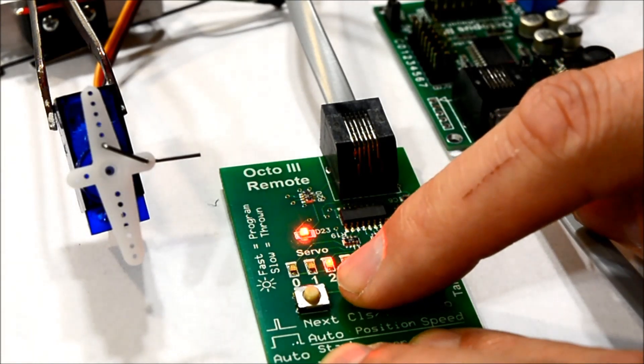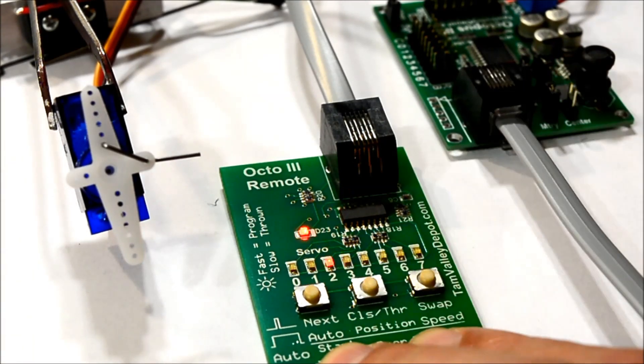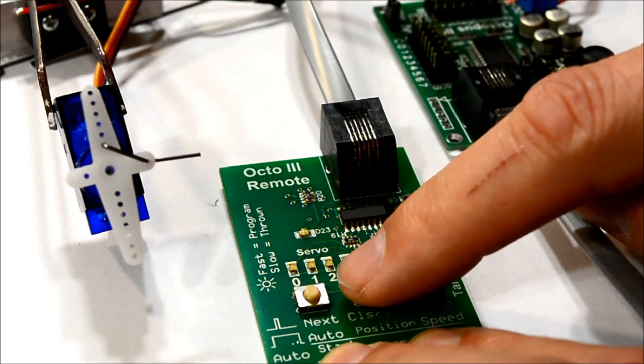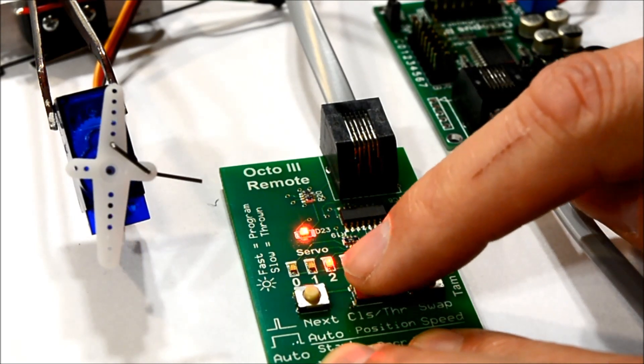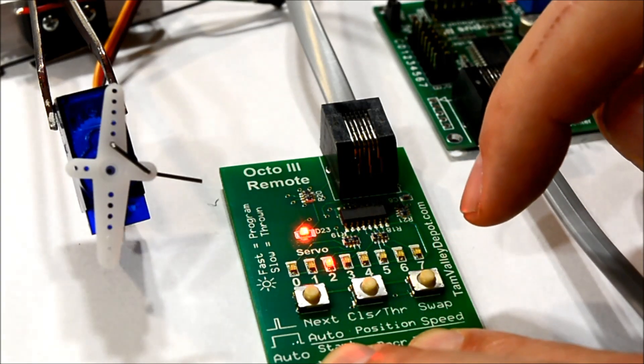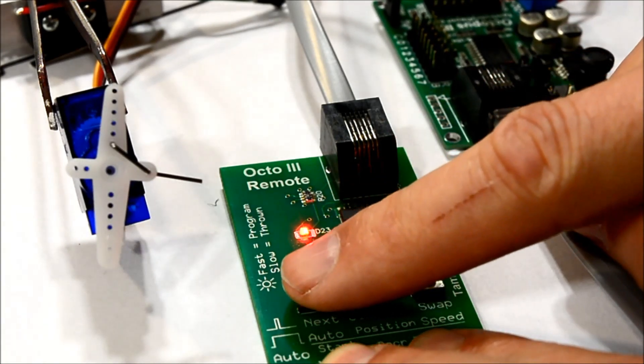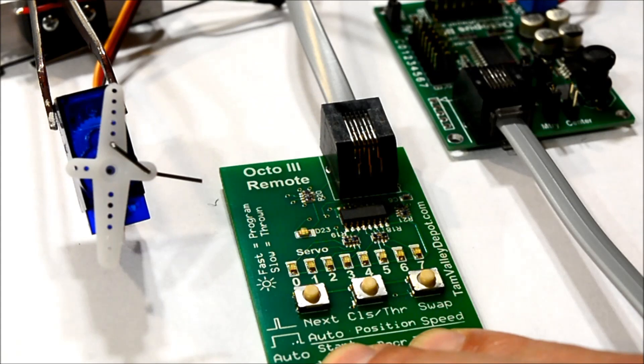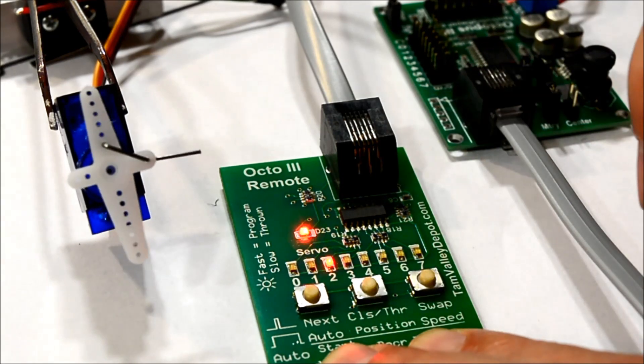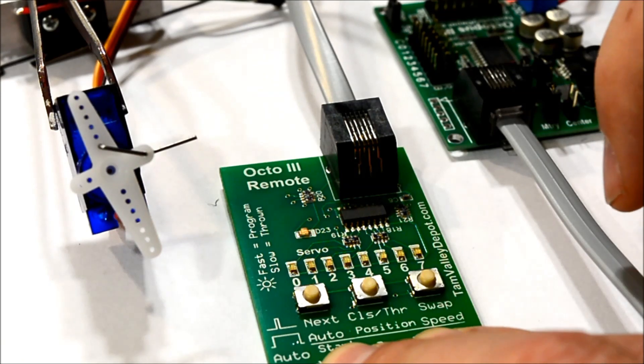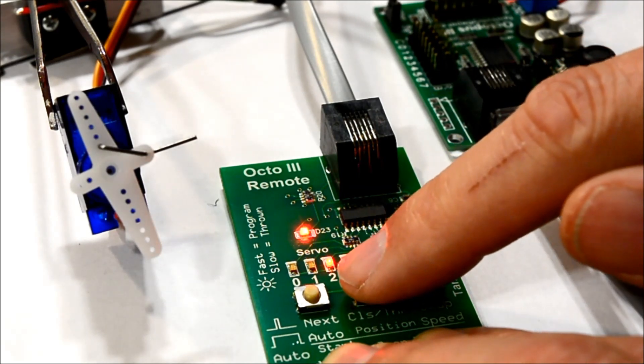So we'll hold this one down for approximately a second, let it up. And then now we can adjust where we want. Okay, that's good. And we hit next again. And then we'll throw it. And that's not looking too bad right off the get go.